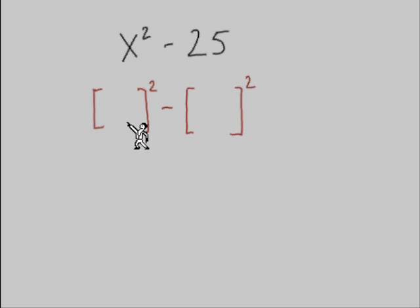So to factor these, I'm even setting up some boxes where I'm asking myself, what to the second power would equal that first term, x squared? And it's just going to be a regular x. What would I need to have in this box? What number to the second power would equal 16? And it's going to be 4.